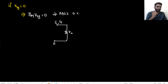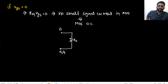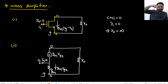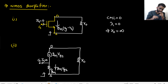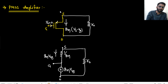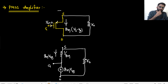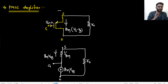Now let's see a problem. We saw that gmVgs current is flowing from this potential to this potential. In the complete MOS, gmVgs current and R0 resistance are there. If you see from the source, you see 1/gm parallel with R0. But to be precise: from source to gate you see 1/gm, and from source to drain you see R0.